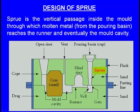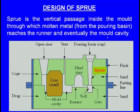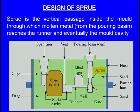Next let us learn about the sprue. What is the sprue? The sprue is the vertical passage inside the mould through which molten metal from the pouring basin reaches the runner and eventually the mould cavity. The molten metal is poured into the pouring basin, passes through the sprue, falls into the sprue well, passes through the runner, and finally fills the cavity.